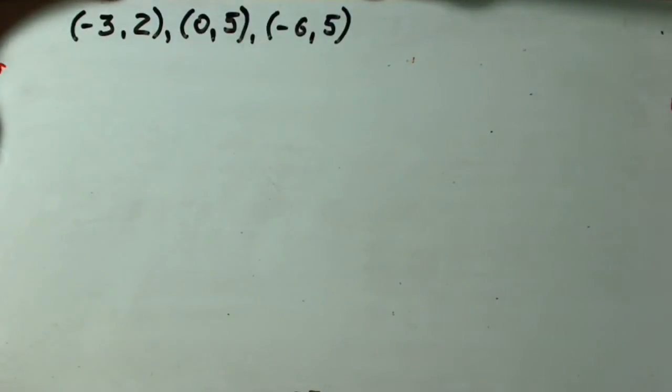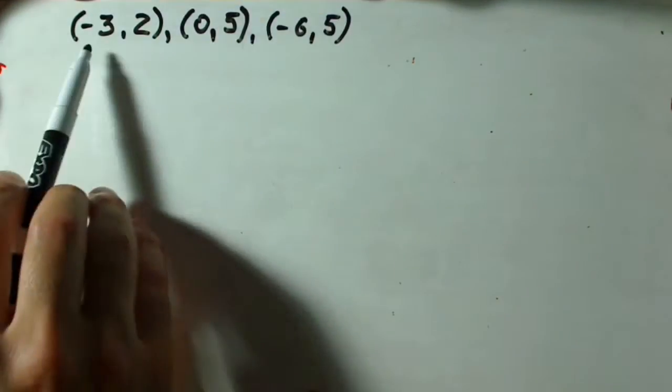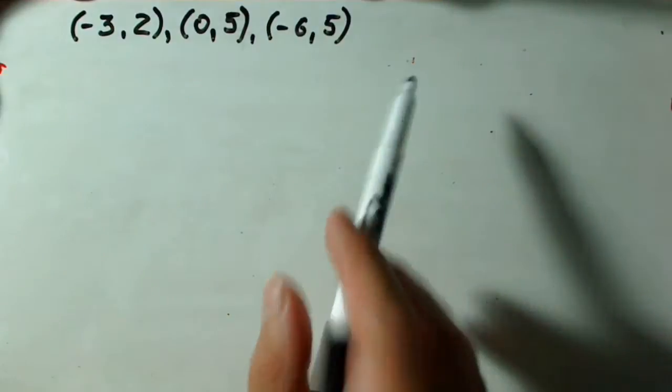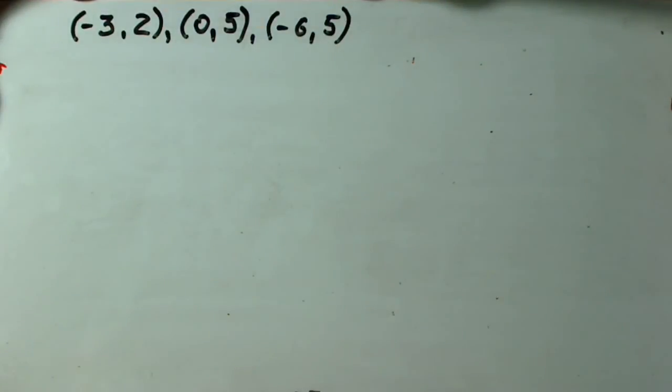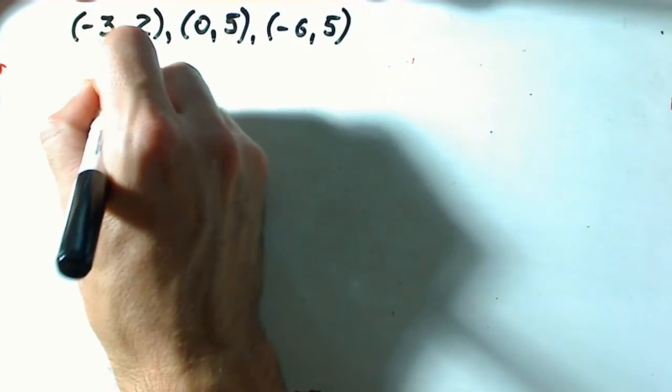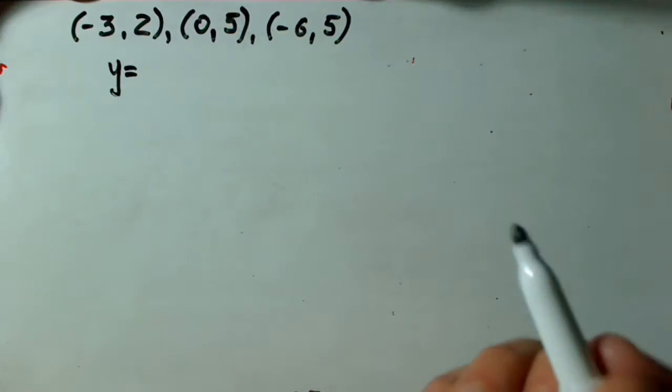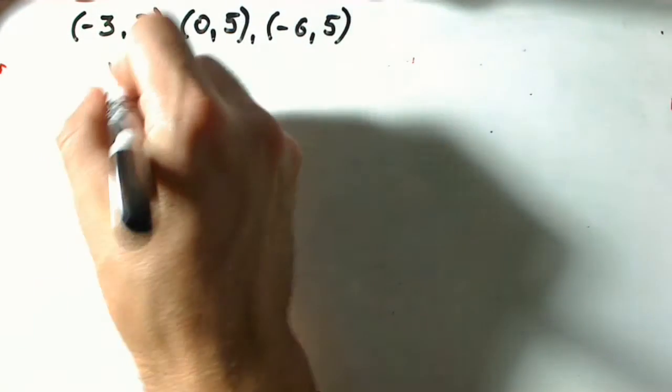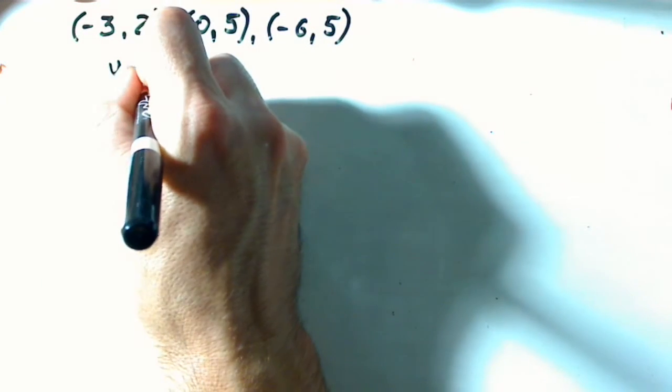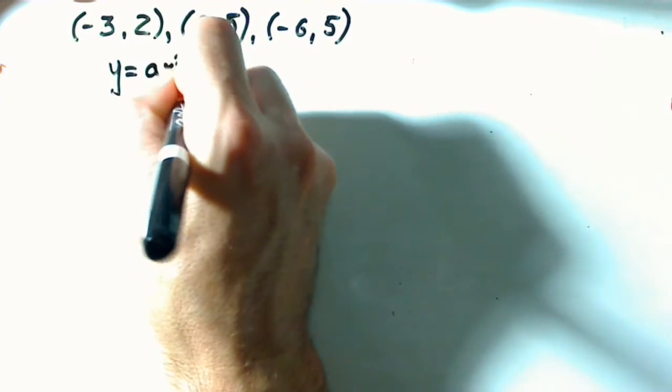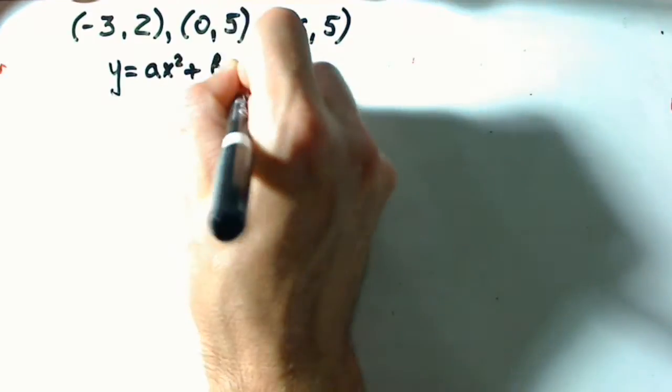Hello guys, now we are asked to find a parabola which is passing through three given points. First of all we have to remember what a parabola looks like. The basic formula is y equals ax squared plus bx plus c.